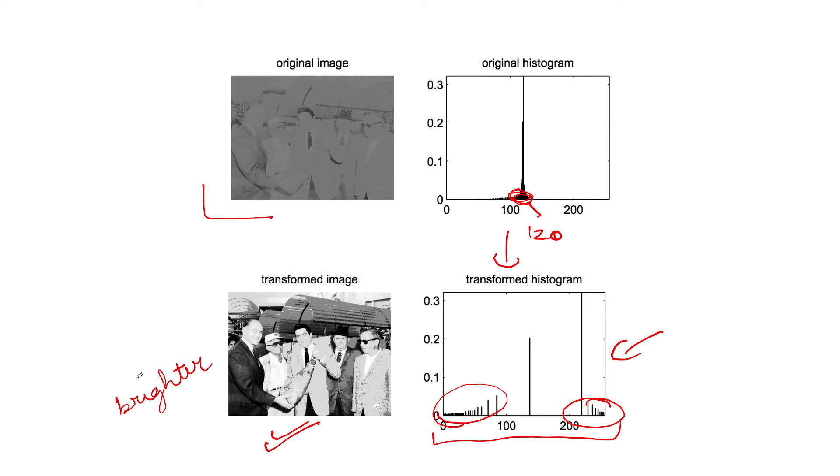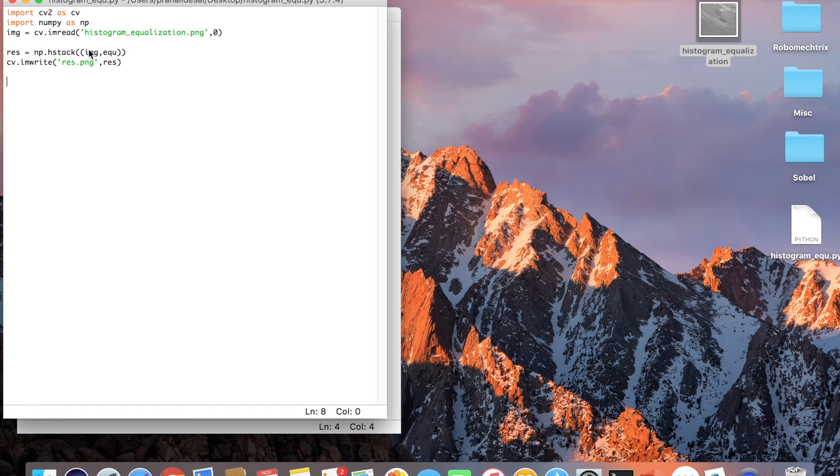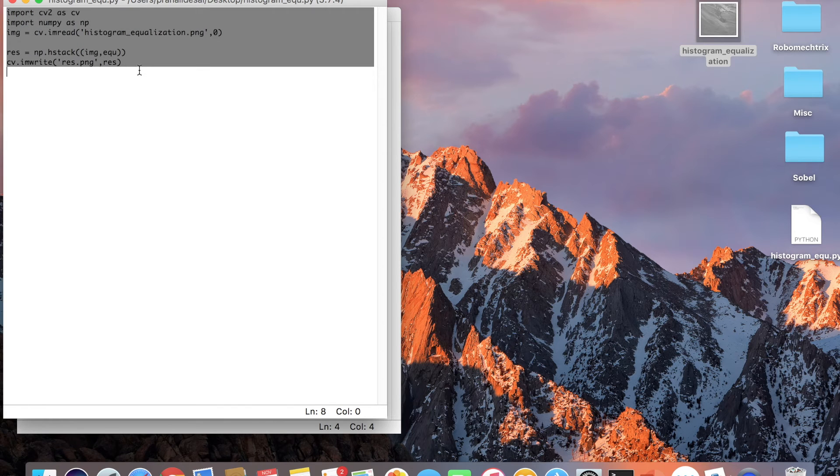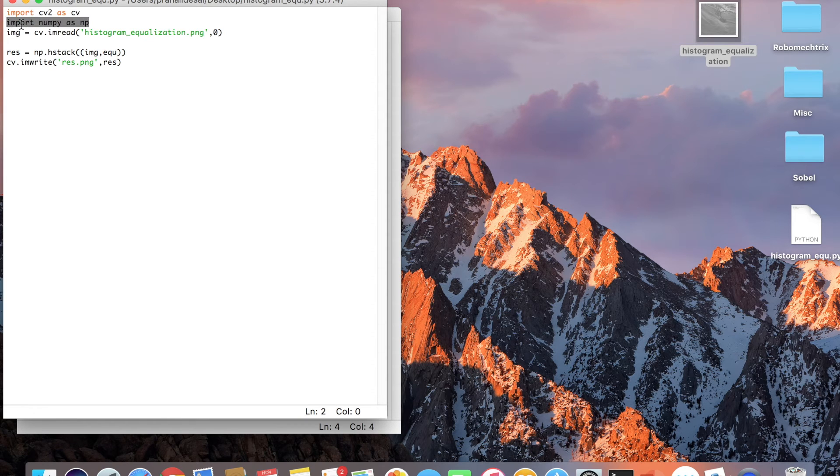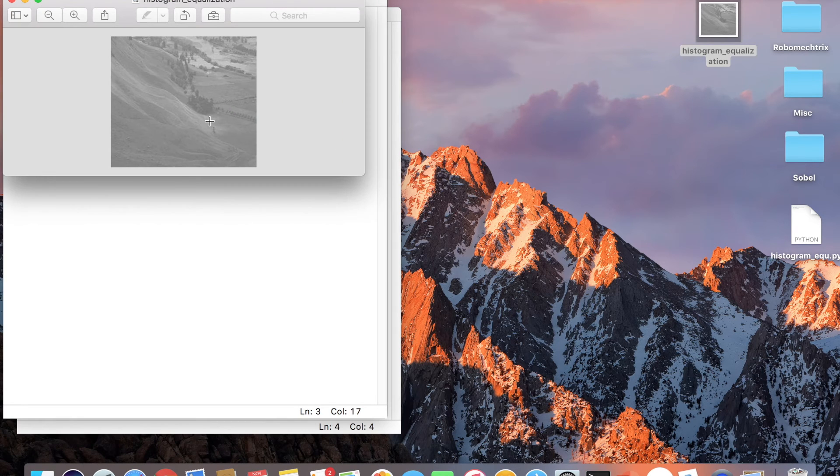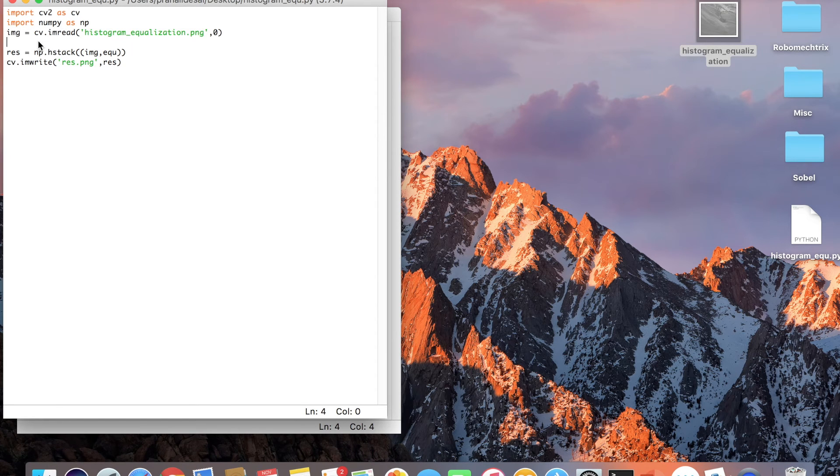So now let's just jump into the coding of it in Python OpenCV. The code is extremely simple. You just import two things: cv2 and numpy. Then I have just imported the image in my Python and the image name is img. Now let's write the code which will actually be needed for histogram equalization. So the code is cv.equalizeHist and now we input the image which we want to equalize, that is img.